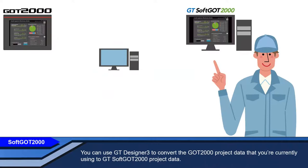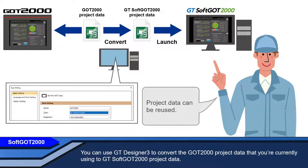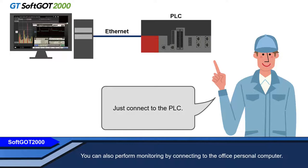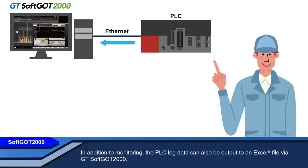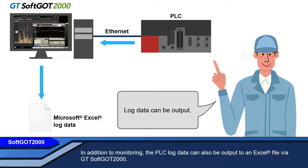You can use your current GT-SOFT GOT2000 project data, and also perform monitoring by connecting to the office personal computer. In addition to monitoring, PLC log data can also be output to an Excel file via GT-SOFT GOT2000.